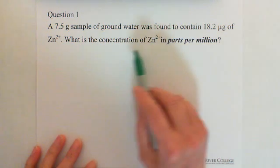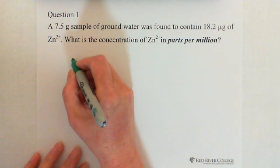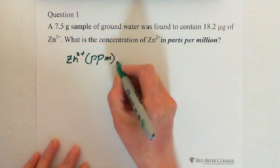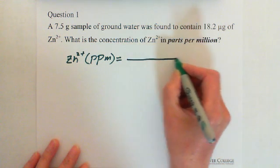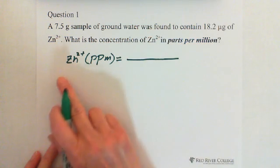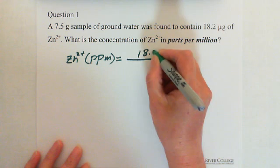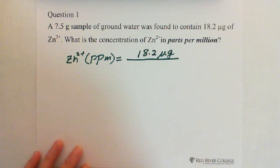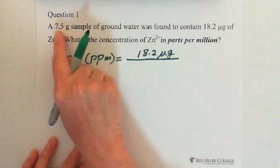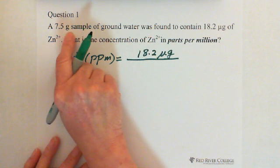We are looking for the concentration of zinc ions, so PPM of Zn²⁺ equals the mass of solute, which is 18.2 micrograms of zinc ions, divided by the mass of solution, which is the ground water at 7.5 grams. However, 7.5 grams is in grams while 18.2 is in micrograms, so we need to convert 7.5 grams to micrograms.